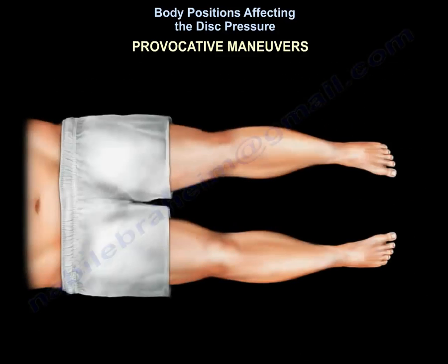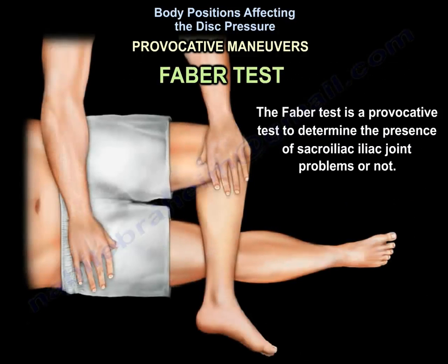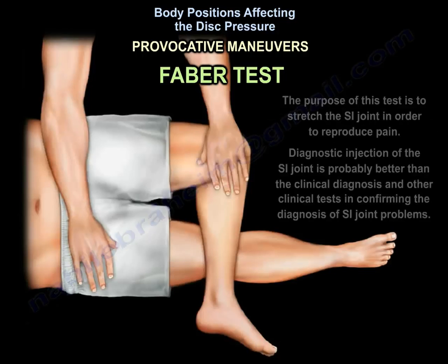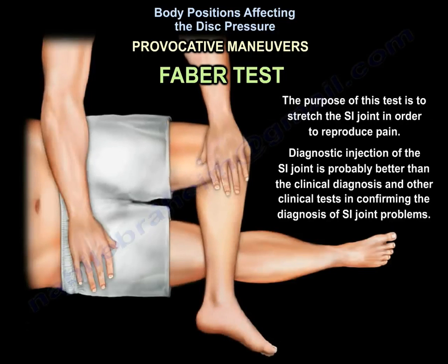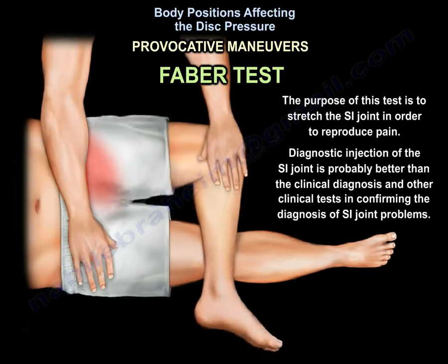There is a provocative test for the sacroiliac joint that determines the presence of a sacroiliac joint problem, called the FABER test. The purpose of this test is to stretch the sacroiliac joint in order to reproduce pain. Diagnostic injection of the sacroiliac joint is probably better than clinical diagnosis and other clinical tests in confirming the diagnosis of sacroiliac joint problems.